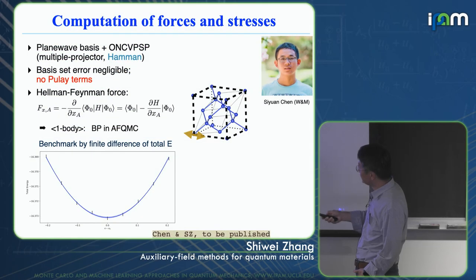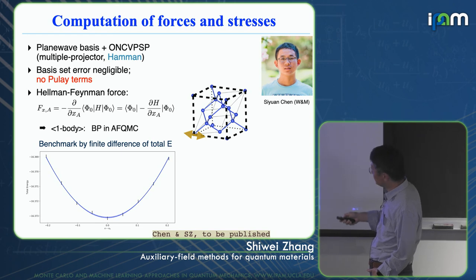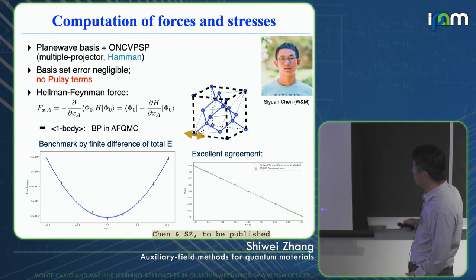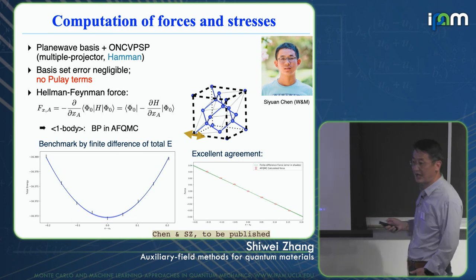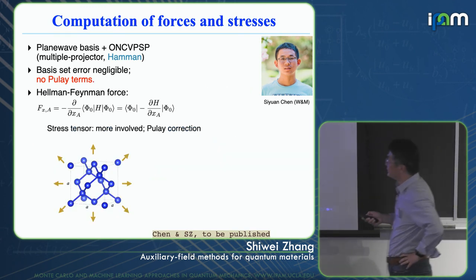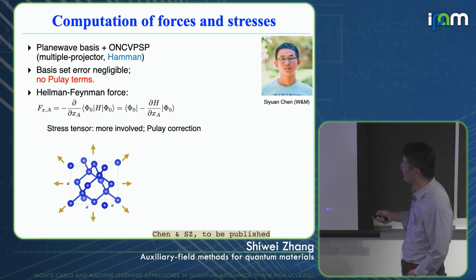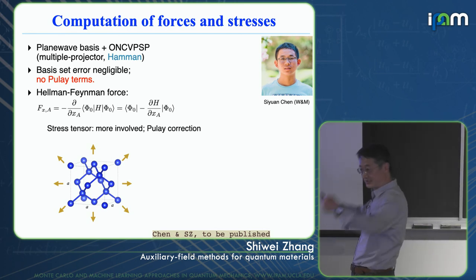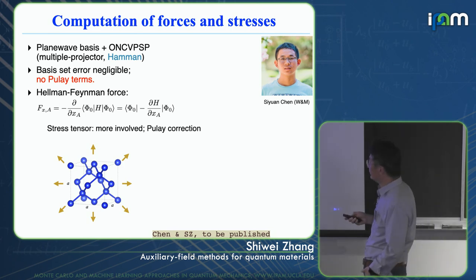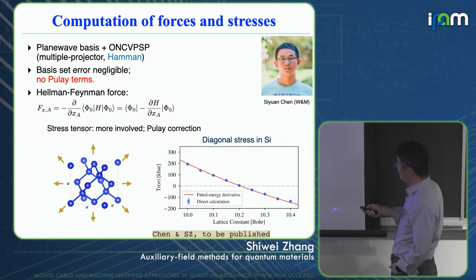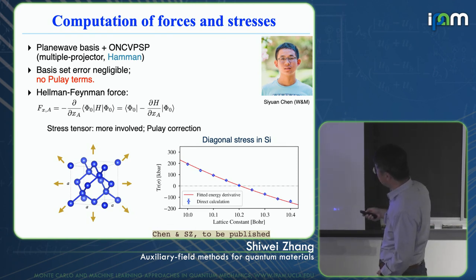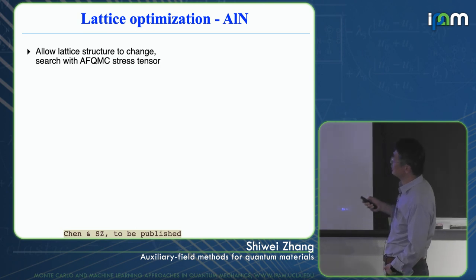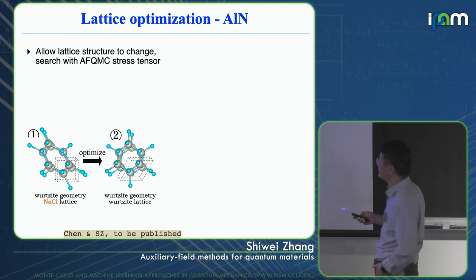As a benchmark: moving an atom, computing the total energy and fitting it — the green line — and comparing with directly computed forces shown as red symbols, which agree with the derivative of the energy curve. The stress tensor is computed similarly: considering different strains of the cell, computing the strain tensor, and cross-checking against energy fits. With forces and stresses implemented, we can allow the lattice structure to change and search with the AFQMC stress tensor to optimize the solid structure.